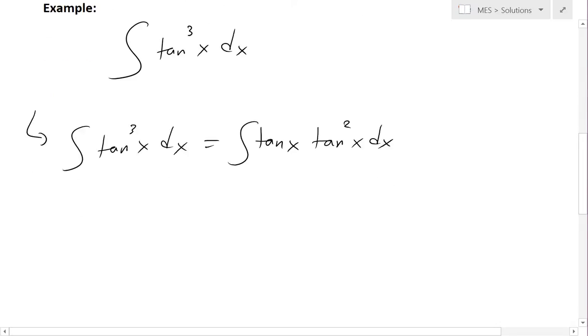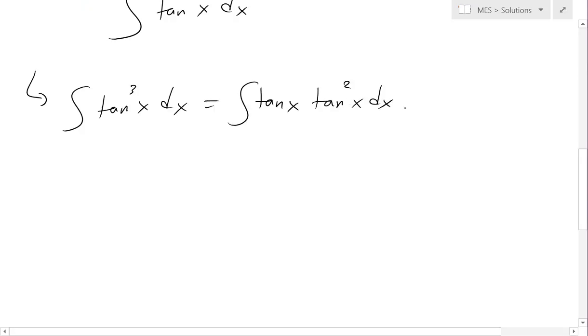Now the reason we write this is because we can convert tan squared x to secant squared x. We know the trig identity: tan squared x equals secant squared x minus 1.